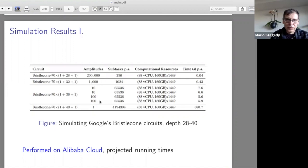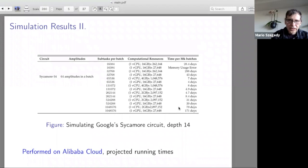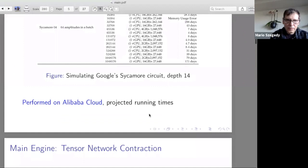A more recent result is when we are simulating the Google Sycamore circuit with depth 14. The actual supremacy circuit is I think depth 20, but even depth 14 already takes in the order of days. Again, in order to get these running times you have to run the software on the Alibaba Cloud.